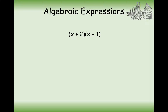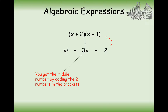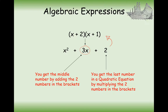Moving on to factorising quadratics. Just a reminder of expanding brackets: we're going to get x squared plus 2x plus another 1x, that makes 3x, and 2 times the 1 makes a 2. So factorising, we're going to be going back from the expanded form. The 3x is formed by adding the 2 and the 1 together — that's a clue as to how we get the factorised bracket. And the 2 is the multiplication of the two back terms as well.